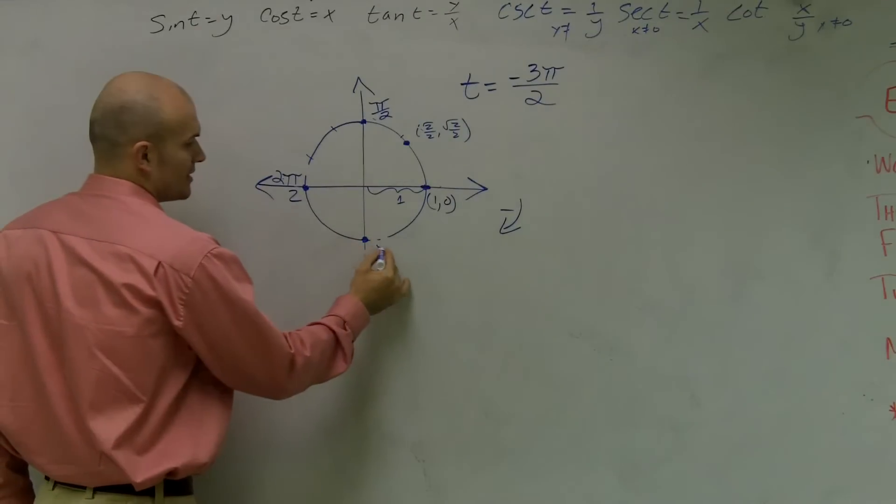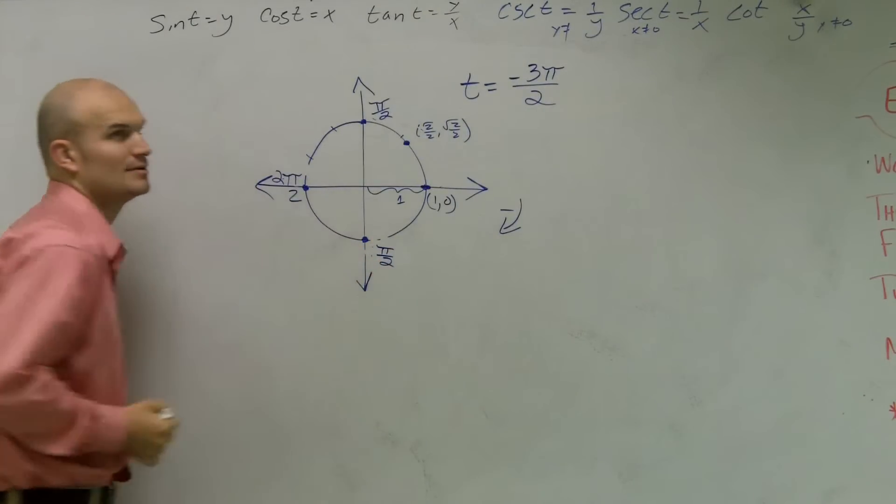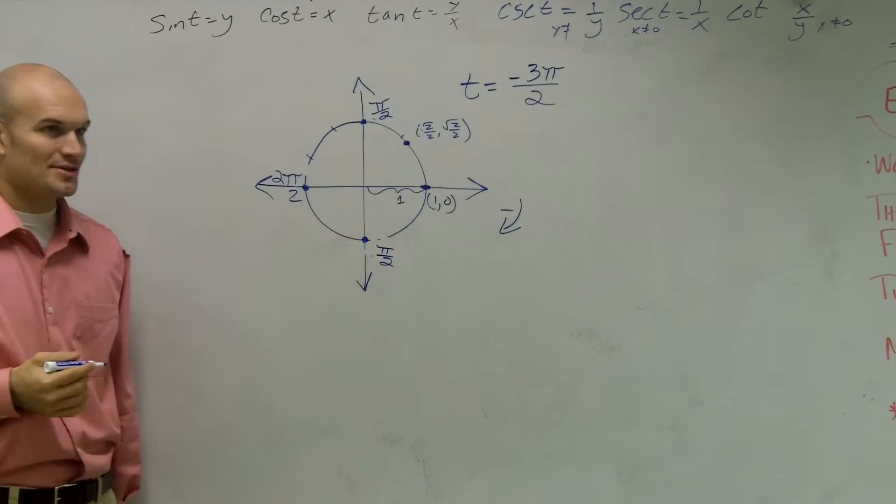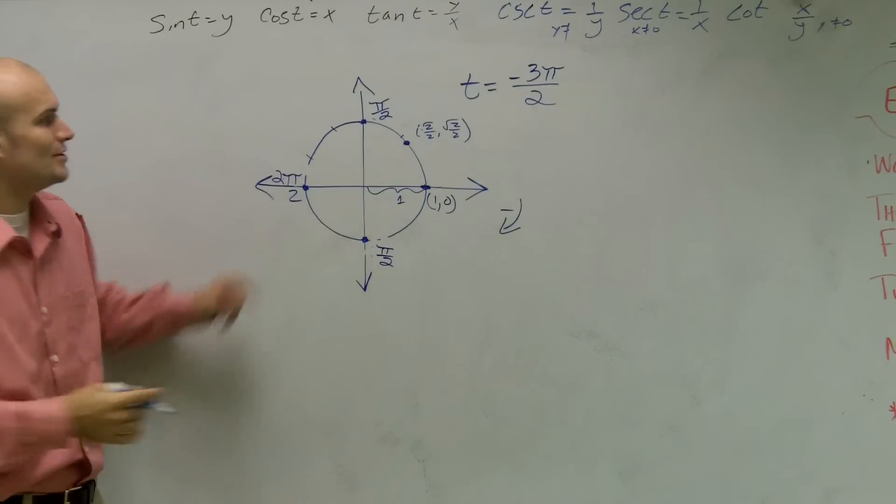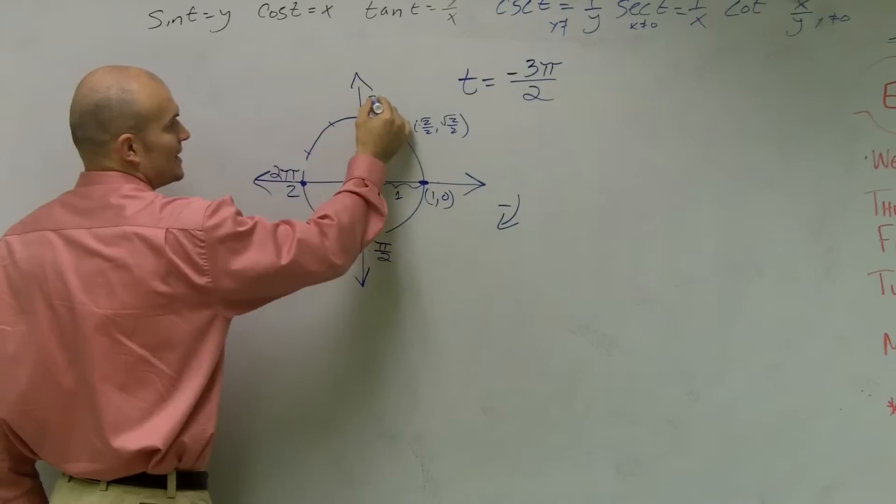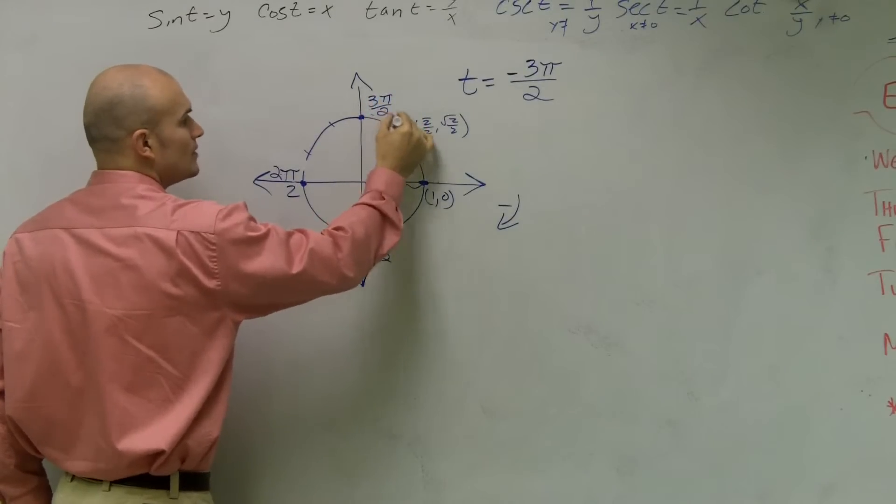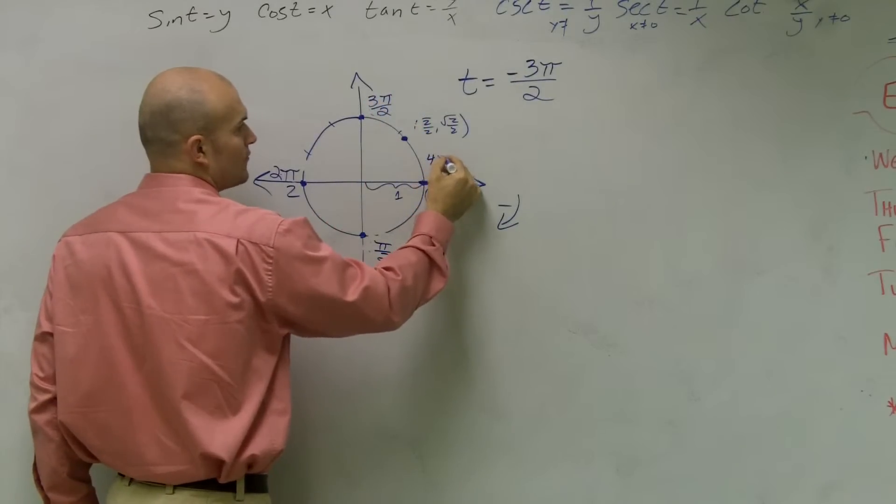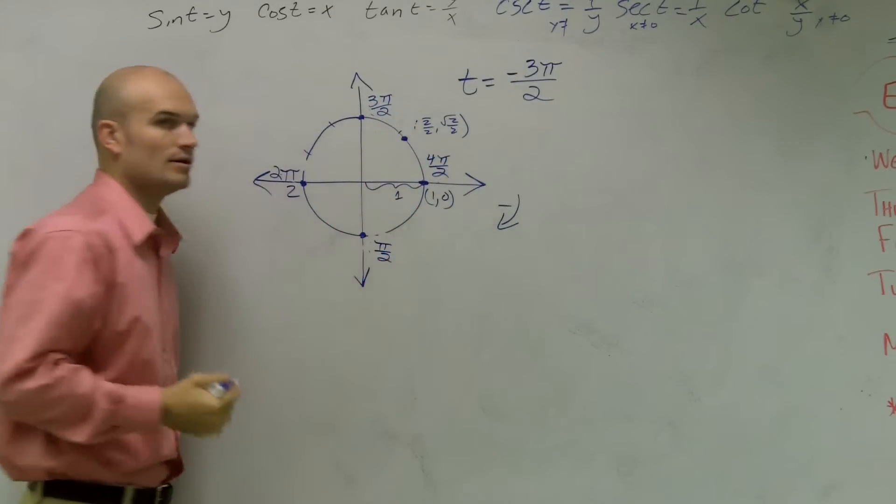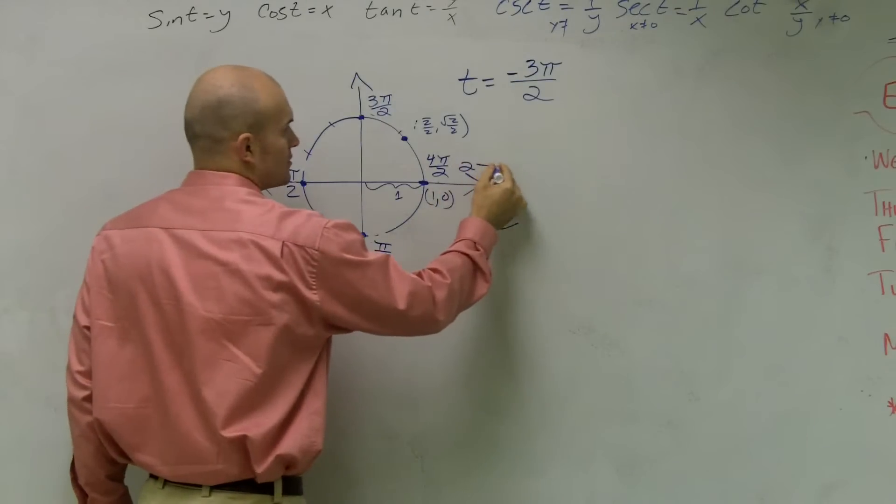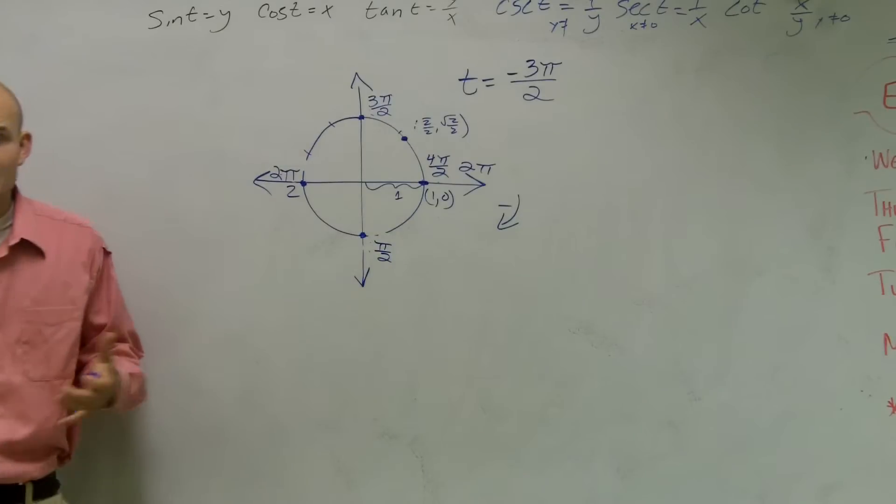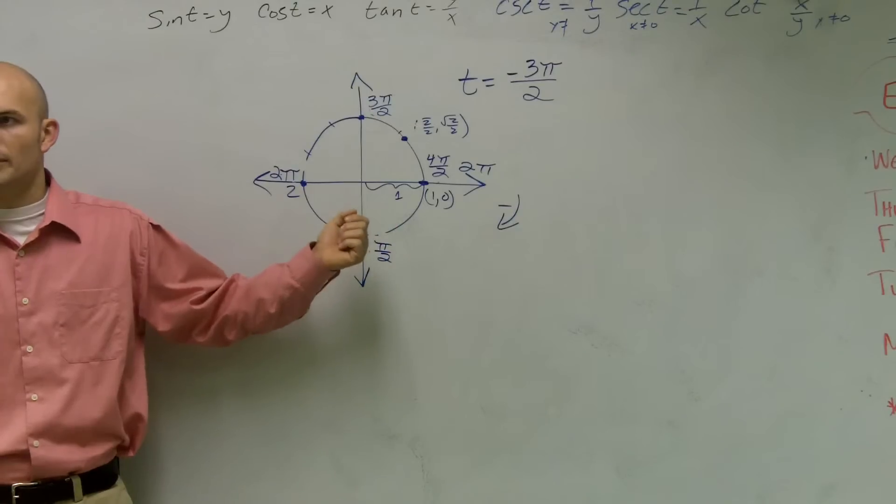So really, this point is pi over 2. This is still 2 pi over 2. And then this point is going to be 3 pi over 2. And this point would be 4 pi over 2, or what we also call 2 pi.